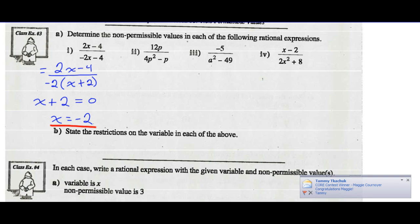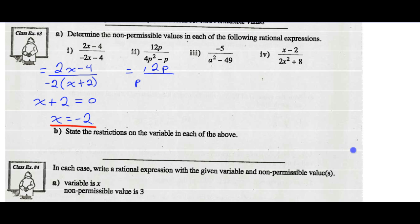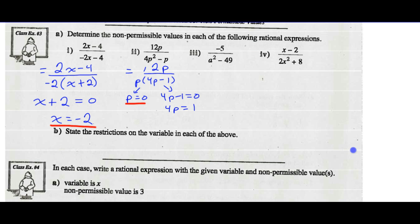For number 2, let's factor that denominator again. I've got 12p over — factoring out a p — I'm left with 4p minus 1. Both those factors contain variables. So I let p equal 0, and 4p minus 1 equal 0. p equals 0 is already one non-permissible value. For the other equation, I add 1 to both sides and divide by 4, so p cannot equal 1 quarter. When p equals 1 quarter, we get 0 in the denominator.